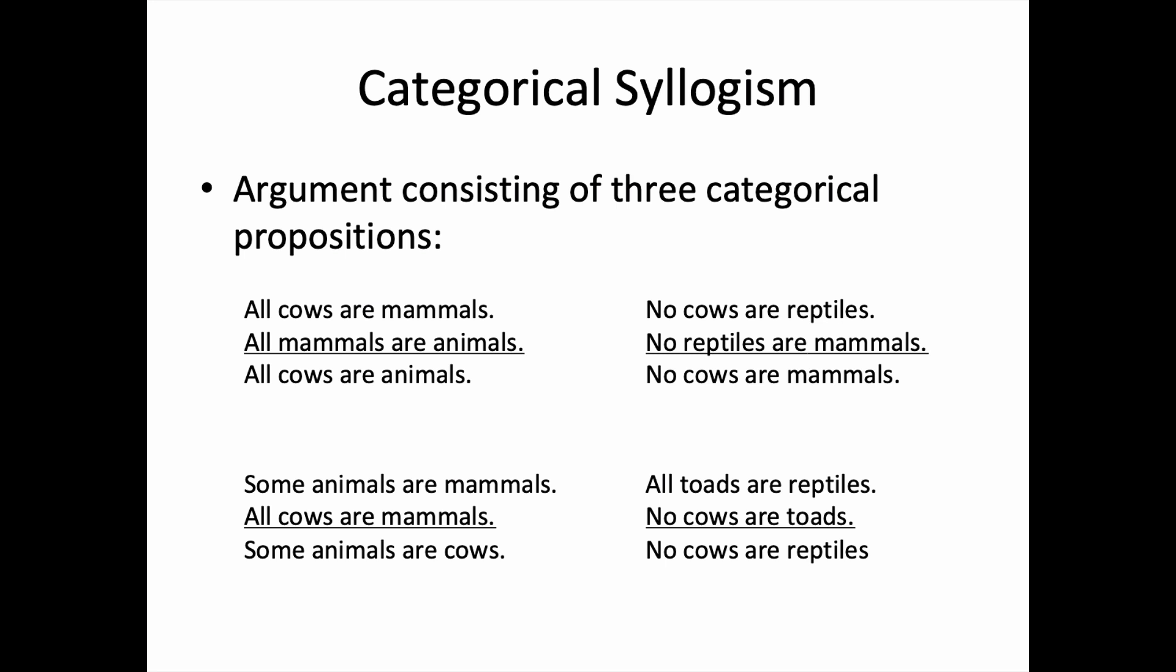First, a little review. Recall that the categorical syllogism is an argument consisting of three categorical propositions. Here are some examples. Pause for a moment, if you like, to review these examples. They've appeared in other videos, such as the video entitled, What is a Categorical Syllogism?